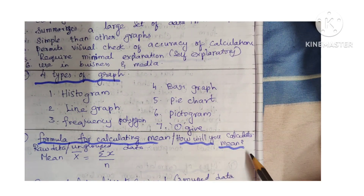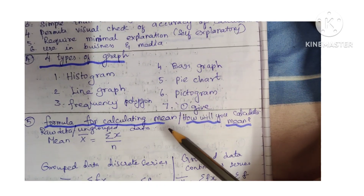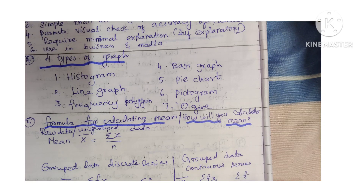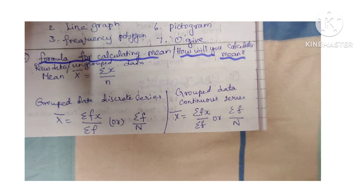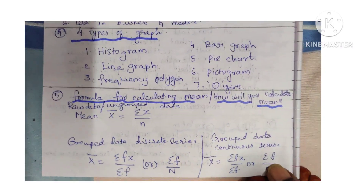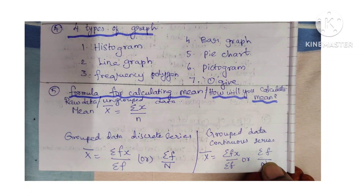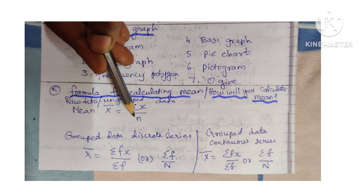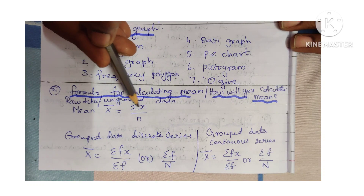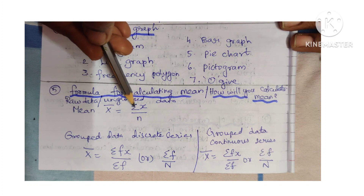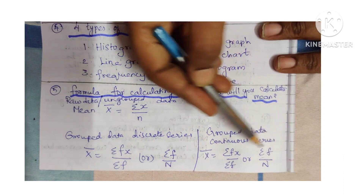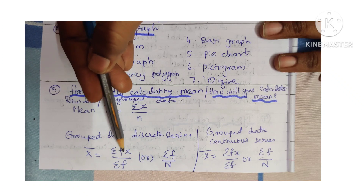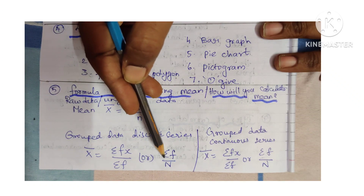Formula for calculating mean: mean is calculated using the following formula. Under that you have raw data and grouped data. For raw data or ungrouped data, mean x-bar equals summation of x divided by n, where n is the number of observations and summation of x means adding all the x values. For grouped data — both discrete and continuous series — the formula is x-bar equals summation of fx divided by summation of f (sigma fx divided by sigma f), or written as sigma f divided by capital N. The same formula applies for continuous series in grouped data.